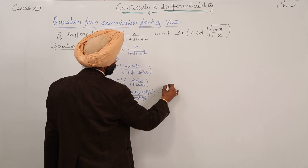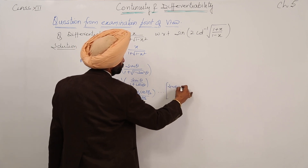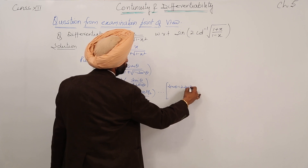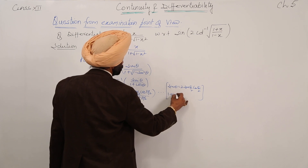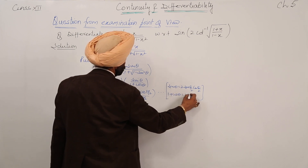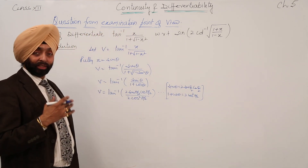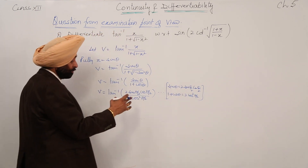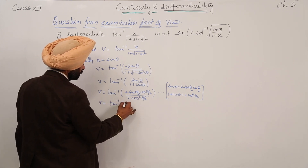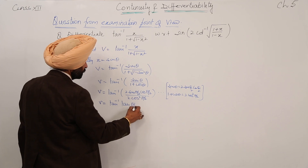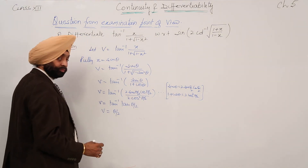We can mention here what identities we are using: sin theta equals 2 sin(θ/2) cos(θ/2), and 1 plus cos theta equals 2 cos squared(θ/2). After cancelling the 2s and cos(θ/2) terms, what is left is v equal to tan inverse of tan(θ/2), which gives v equal to θ/2.